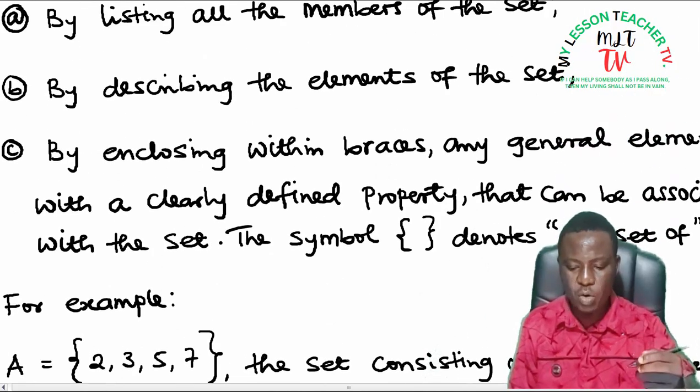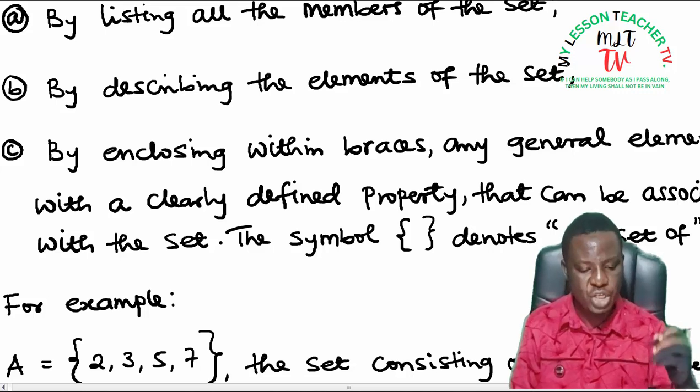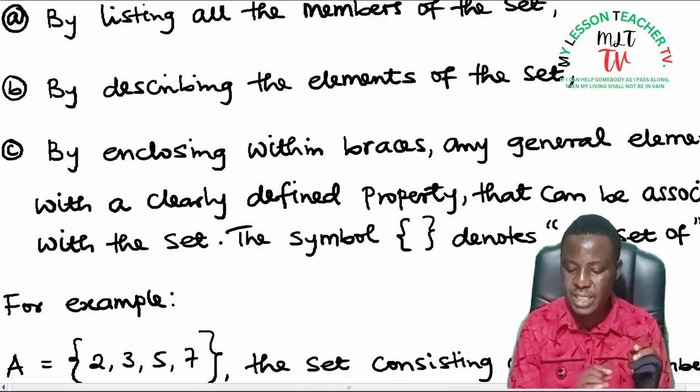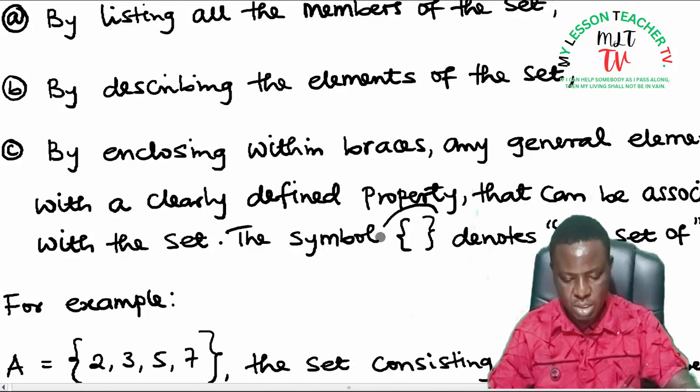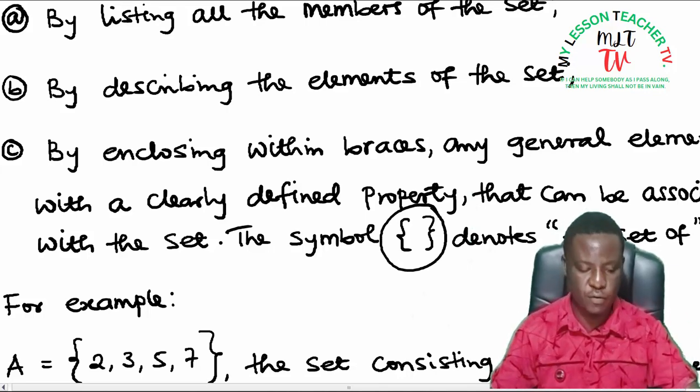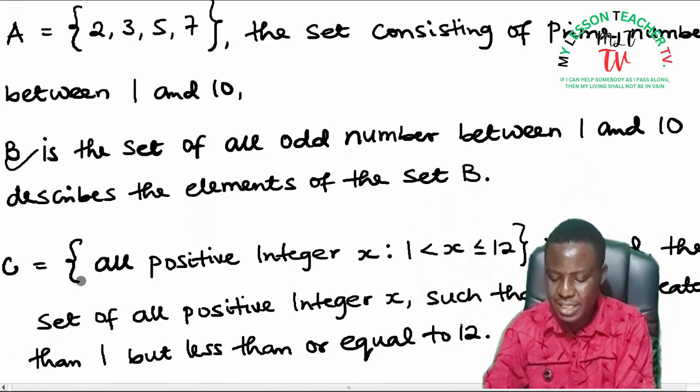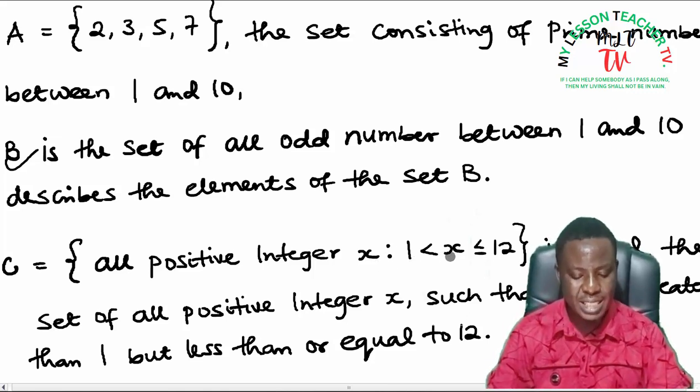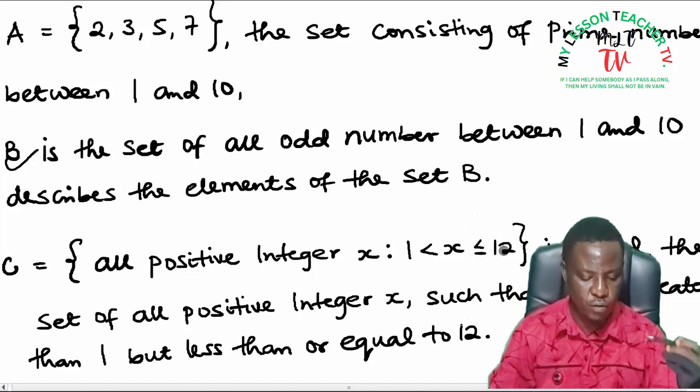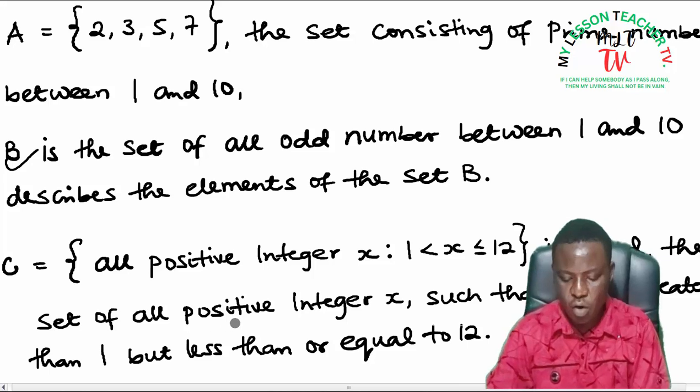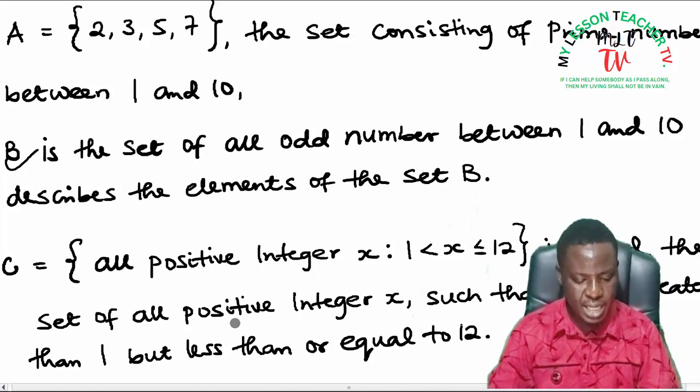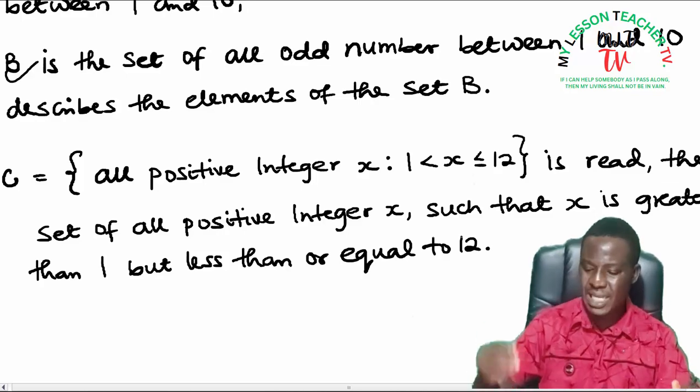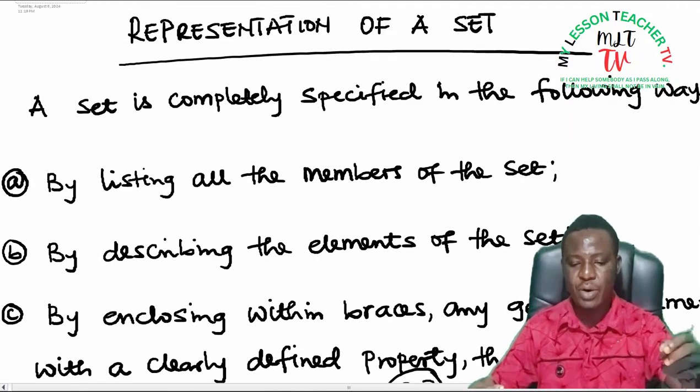C: by enclosing within braces any general element with a clearly defined property that can be associated with the set. The symbol this denotes 'the set of.' We have it as C is the set of all positive integers x such that 1 is less than x and x is less than or equal to 12. So these are the ways you can represent a set.